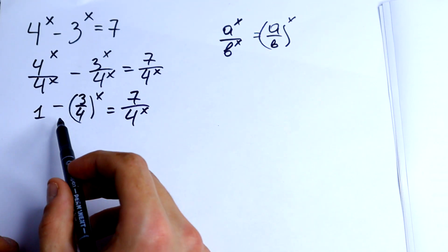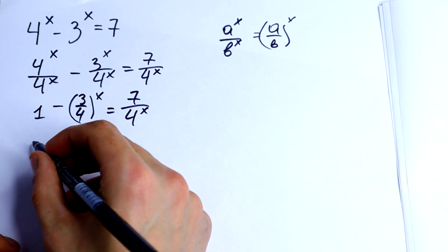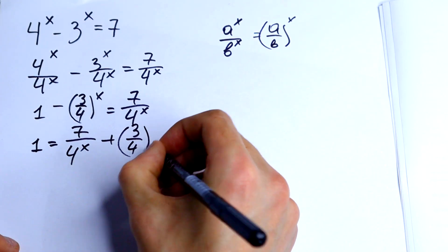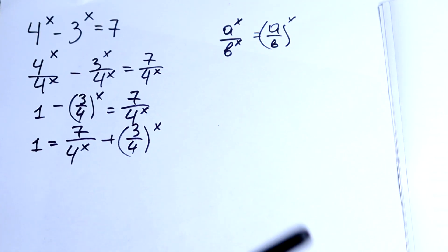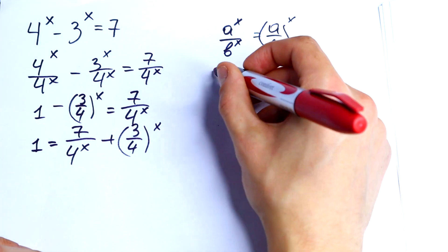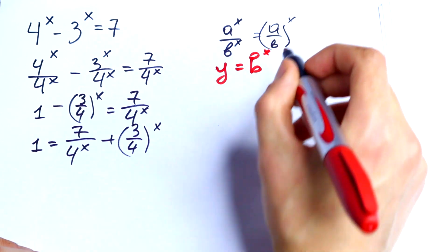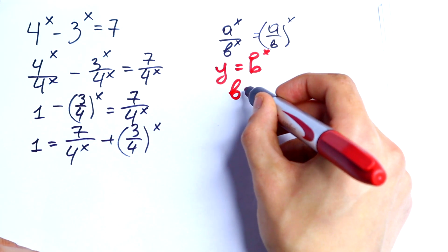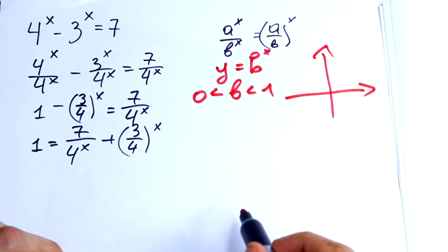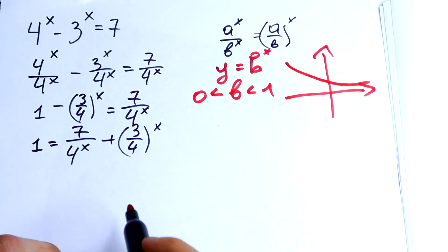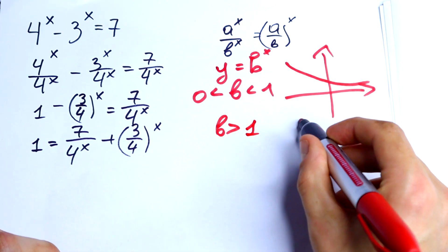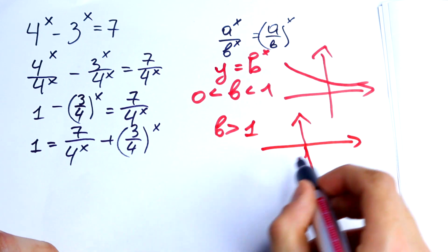The next step: I will take this to the right side, giving 1 equals 7 over 4^x plus (3/4)^x. Now let's recall exponential functions. If we have y equals b^x, when b is between 0 and 1, the function is decreasing. But if b is greater than 1, the function is increasing.